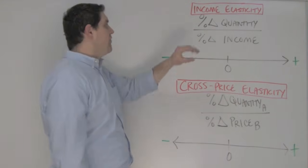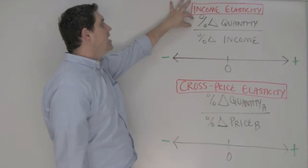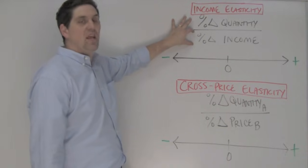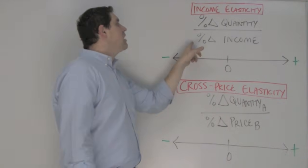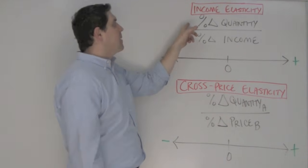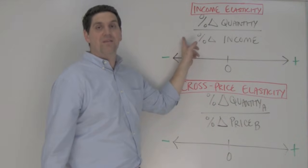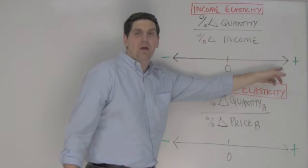The income elasticity of demand coefficient uses this equation. The percent change in quantity caused by a percent change in income. So if the income goes up for some product and that causes people to buy more of it, that would pop out a positive number, right? A positive number over here.